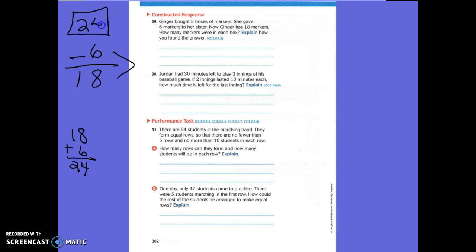You say it's 24. Let's see if 24 minus 6 equals 18. Can we do 4 minus 6? No. So we're going to make this a 1, and this a 14. 14 minus 6 is 8. And then 1 minus 0 is 1. So we know how many total markers we have now.